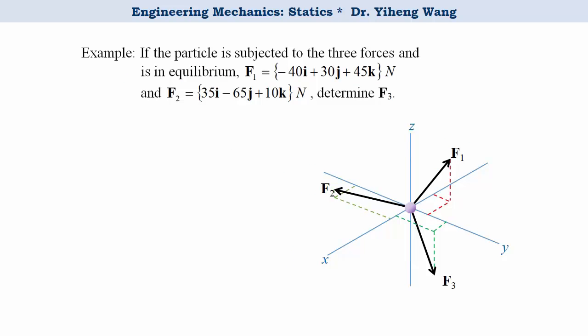Here is a simple example. The three forces acting on the particle are in equilibrium, and we know force F1 and force F2 in Cartesian vector forms. We now need to determine force F3. The first step is to write the force equilibrium equations according to Newton's first law, that the resultant forces along the x, y, and z directions must all be zero.